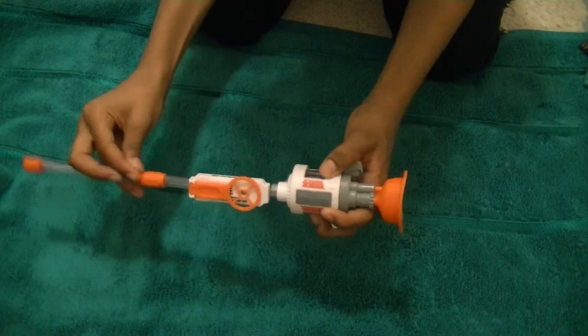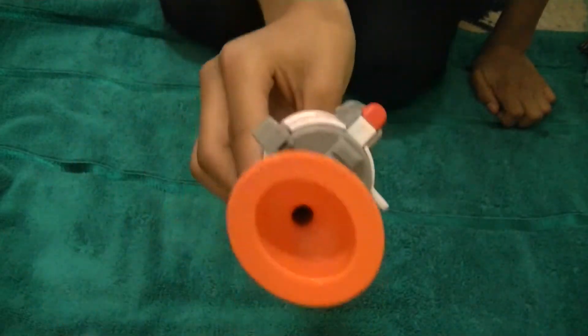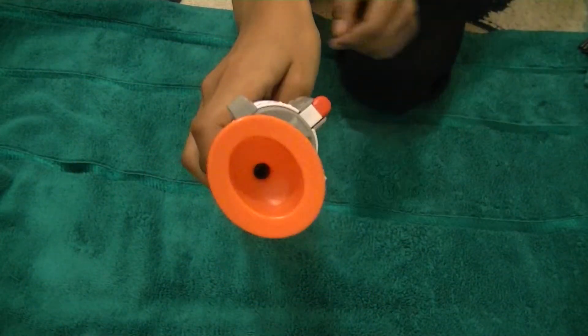And basically you just blow into this bit here and the little pellets will come out.